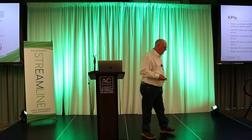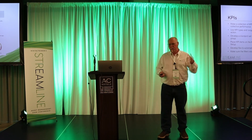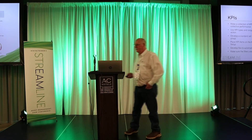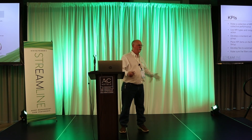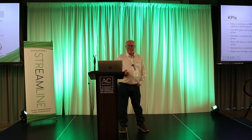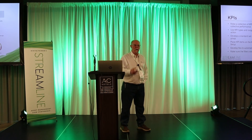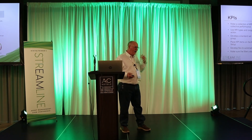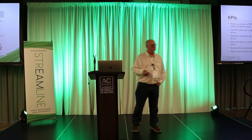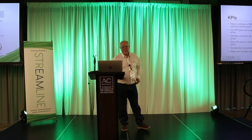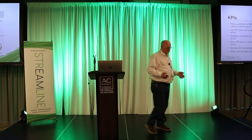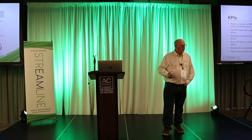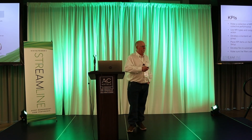KPIs are cool — you can have a number, a tachometer, or a sliding bar. Make a collection of KPIs that show collective performance, maybe the whole company. Use KPI types and ranges to guide user action. If a user is getting behind on closing work orders, give them a visual indication. Develop a standard set of KPIs by user group — for maintenance mechanics, a set of KPIs that pertains to them.